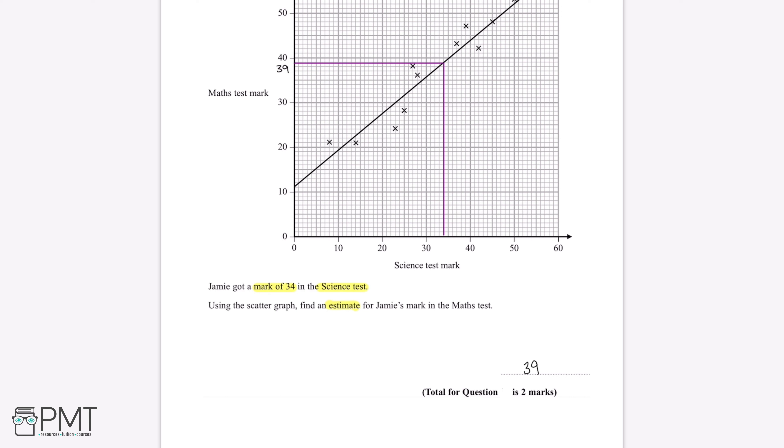And we'll get two marks for this question. We'll get our first mark for drawing a line of best fit, and we'll get our second mark for finding a suitable estimate for Jamie's mark in the maths test.